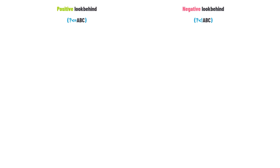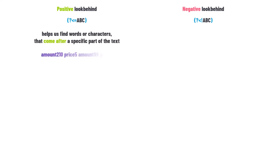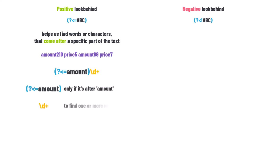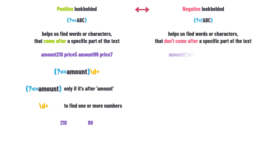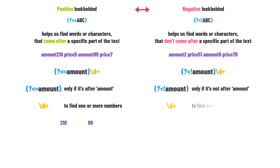Positive look-behind helps us find words or characters that come after a specific part of the text. For example, (?<=amount)\d+ finds numbers that come after the word 'amount'. Negative look-behind is the opposite: (?<!amount)\d+ finds numbers that do NOT come after 'amount'. These look-around patterns are powerful tools for making assertions about presence or absence of patterns in relation to others.